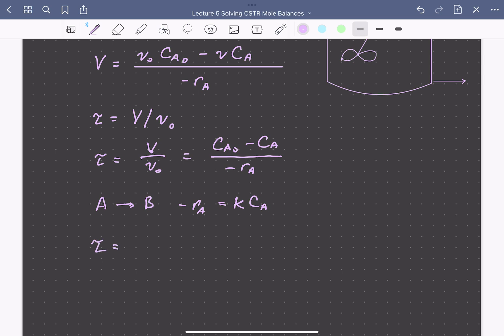then our residence time is just going to be equal to CA0 minus CA divided by KCA.